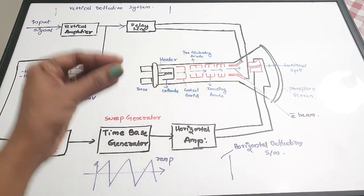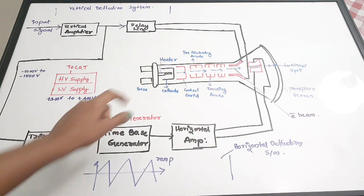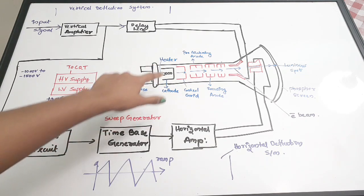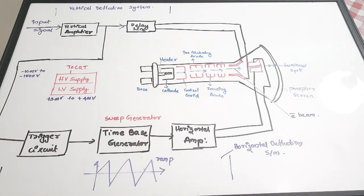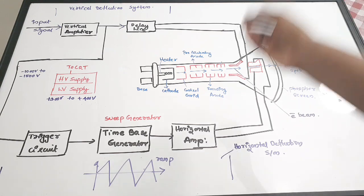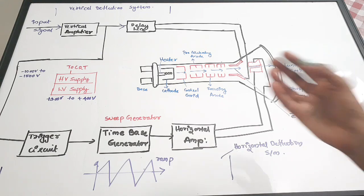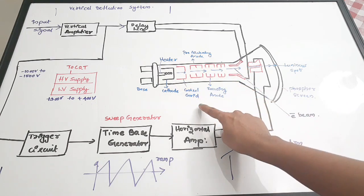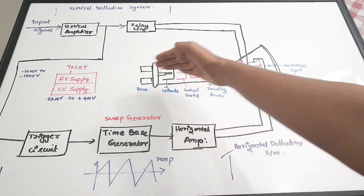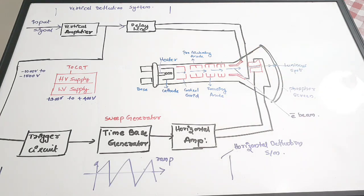Inside the electron gun there is a heater and a cathode. The heater turns on, heats the cathode, and the cathode starts emitting electrons. Since the electrons won't be focused, they are first passed through the control grid. The opening of the control grid is very narrow, which turns the emitted electrons into a narrow, concentrated beam.